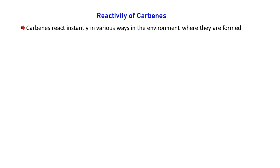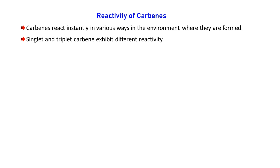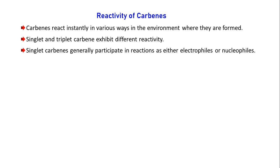Carbenes react instantly in different ways in the environment once they are formed, because they are very reactive in nature. Once they are produced there will be an immediate reaction. Singlet and triplet carbenes exhibit different types of reactivity. To understand that you have to know their properties — you can click the link appearing on the screen in the top right corner. Singlet carbene generally participates in reactions; it may act as an electrophile or it may act as a nucleophile, though nucleophilic nature is rare but still possible.